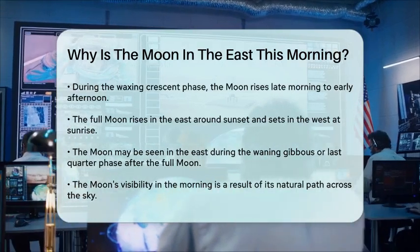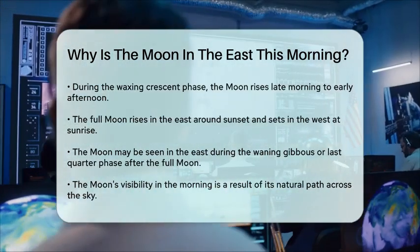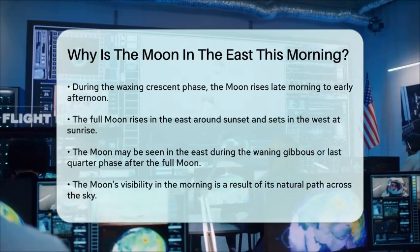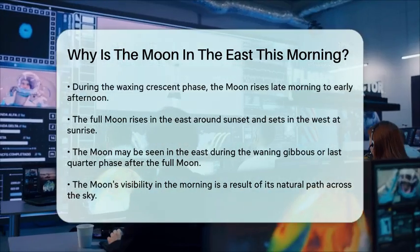In summary, the moon is in the east this morning because of Earth's rotation and the moon's own eastward orbital motion. The exact timing depends on the moon's phase and its position relative to the sun and Earth.